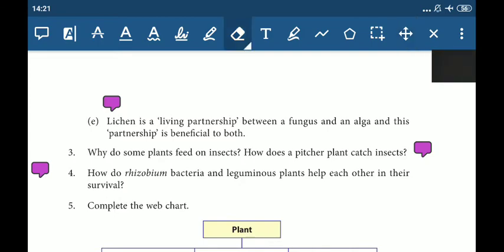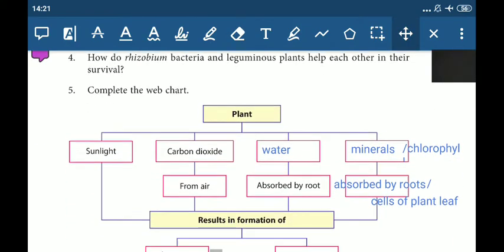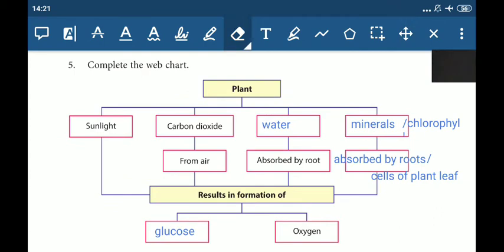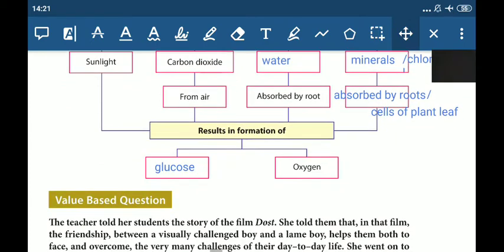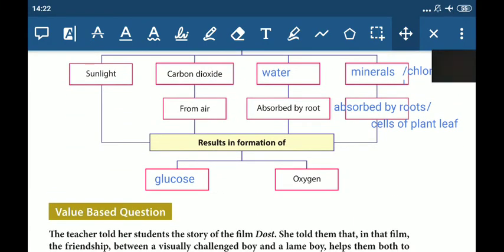Now next question, complete the web chart. You can see here the web chart. Plant requires sunlight, carbon dioxide, this box may be water, for example. Next, minerals, chlorophyll, carbon dioxide, water absorbed by roots. So it will result in the formation of glucose and oxygen.